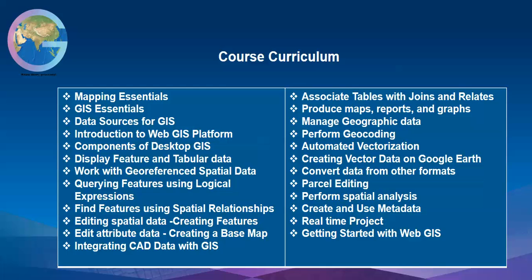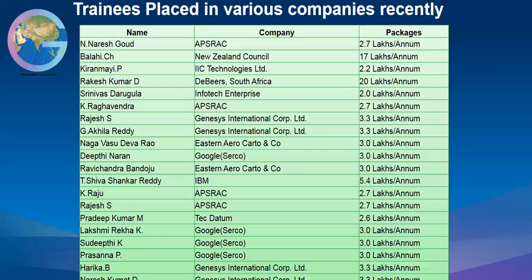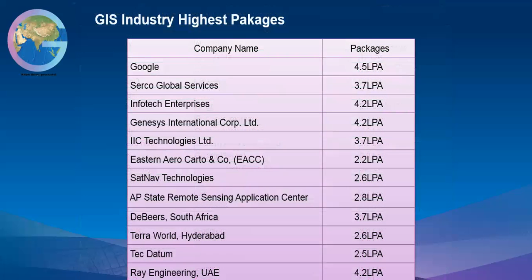As a part of this course, you will also be creating a web GIS application. These are the recent companies where our trainees have been placed — companies like Abstract, New Zealand, Consul, IIC Technologies, InfoTech and Enterprise Solutions. And if you see here, these are the average packages listed in the GIS industry.